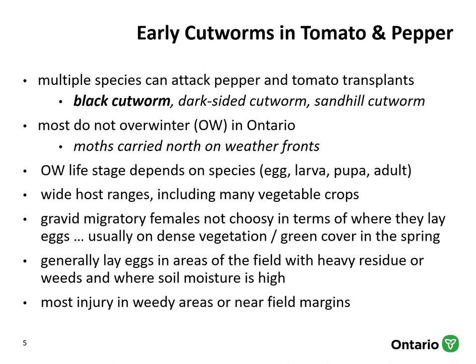Cutworms have a wide host range, including many vegetable crops. Female moths will lay their eggs on a number of plant species, with a preference for winter annual broadleaf weeds such as chickweed and various members of the mustard family, among others. In the springtime, they choose dense vegetation and weedy areas where soil moisture is high, and in terms of injury, it's usually at the crop borders. The eggs are small, spherical and laid in clusters, and the females can lay up to 1,900 eggs in their lifetime.